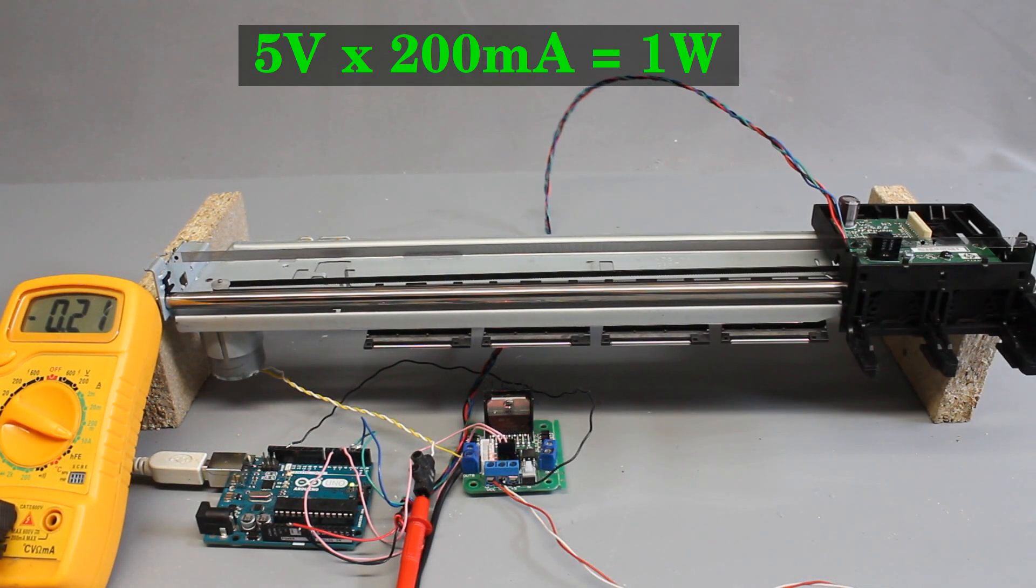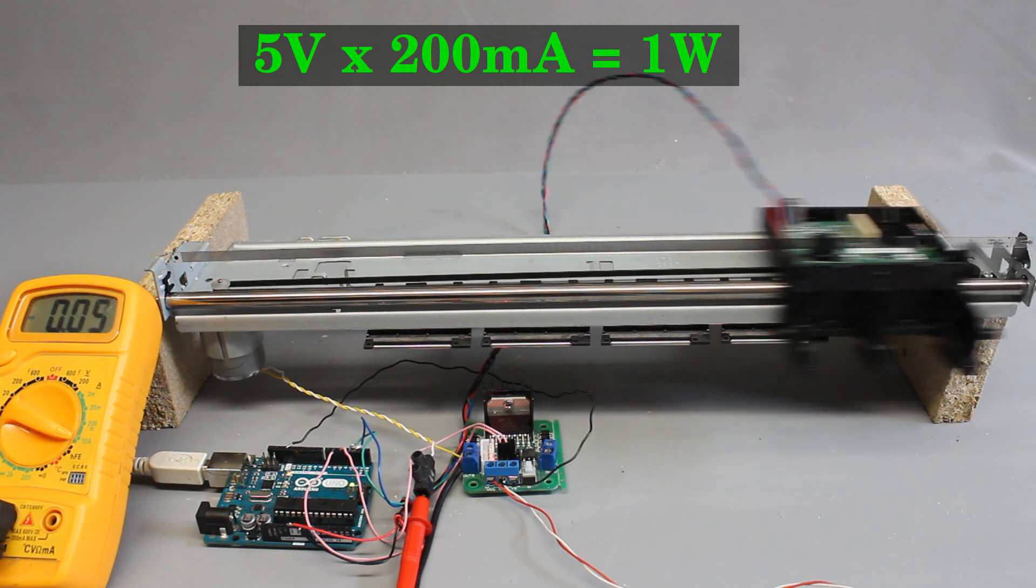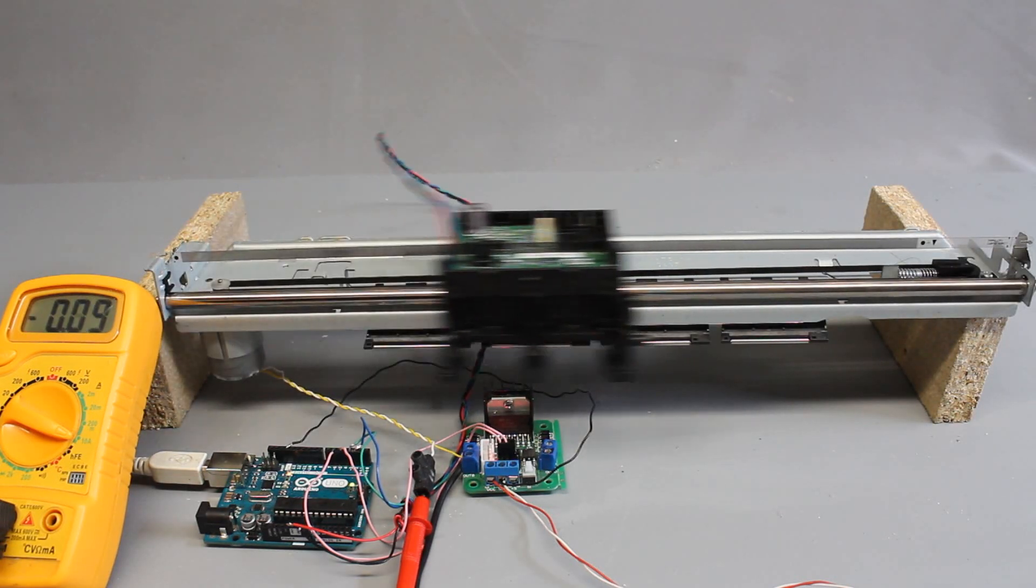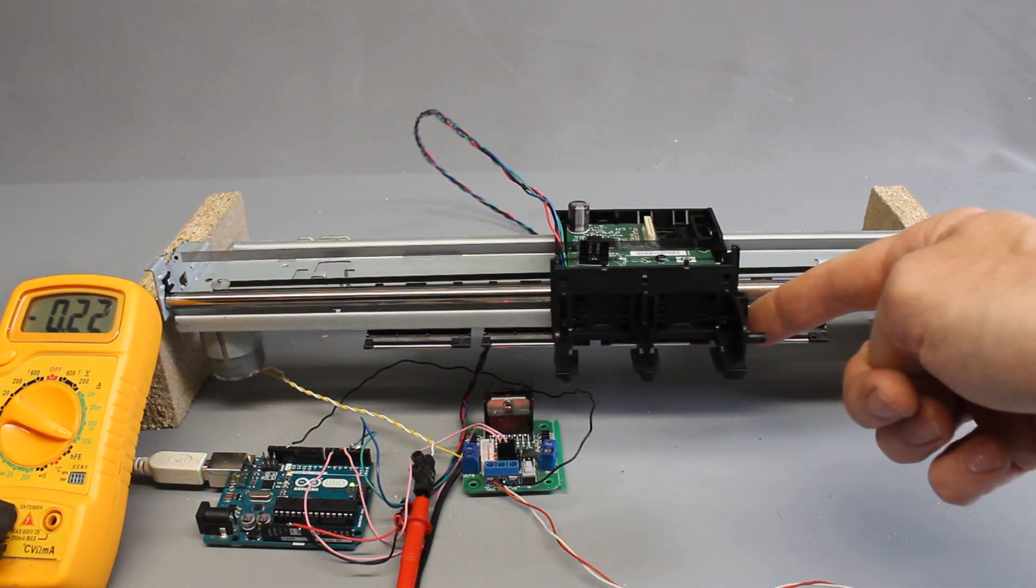The motor consumes around 1W of electric power when operated at 5V. High speed means low torque, the carriage can be stopped by hand easily.